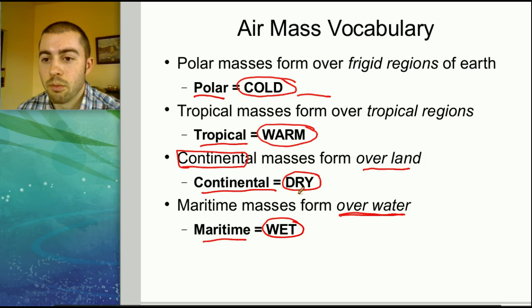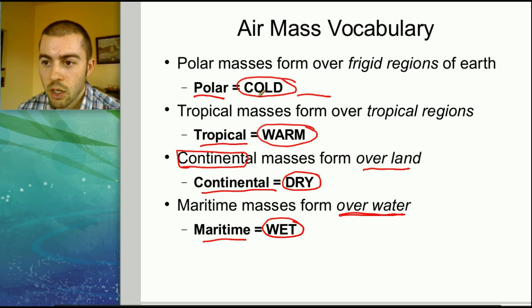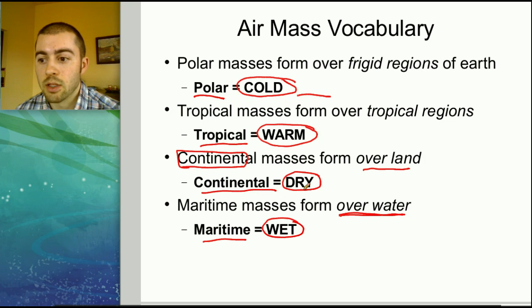So the four words we need to know are polar, tropical, continental, and maritime. For each of them, associate one simple word: polar equals cold, tropical equals warm, continental equals dry, and maritime equals wet.